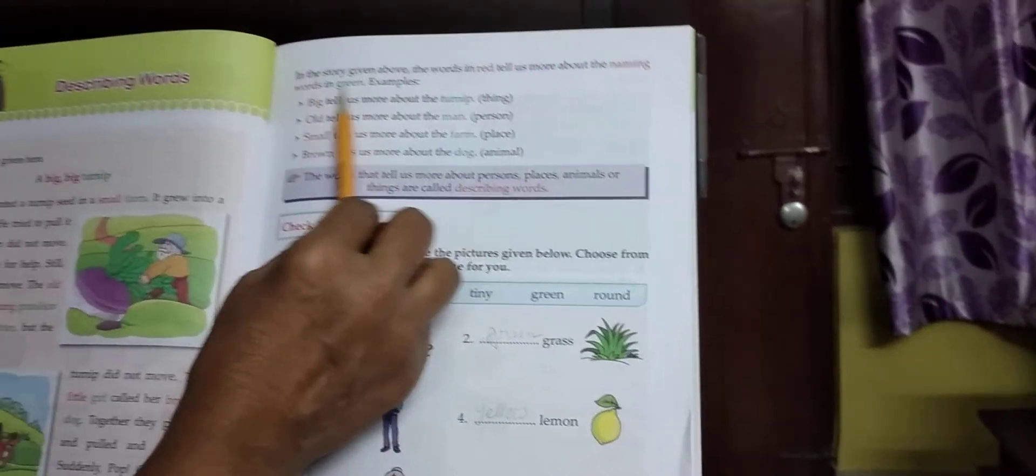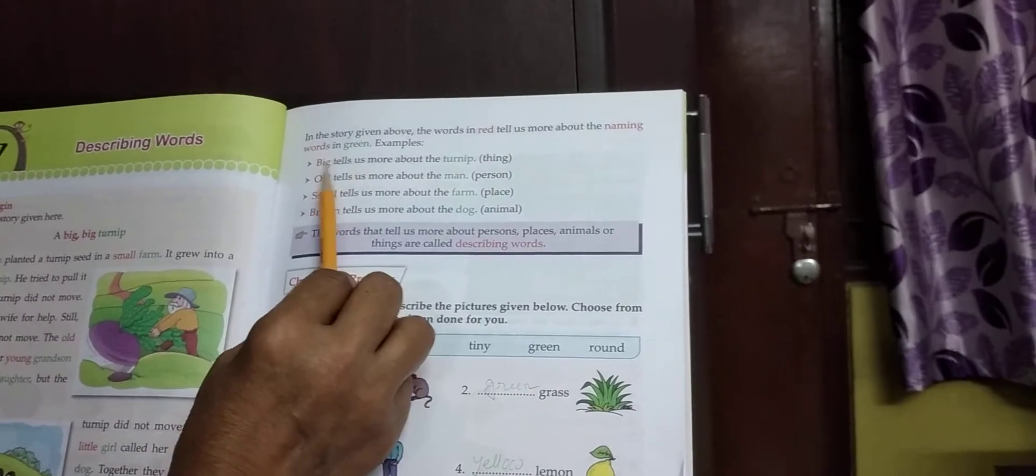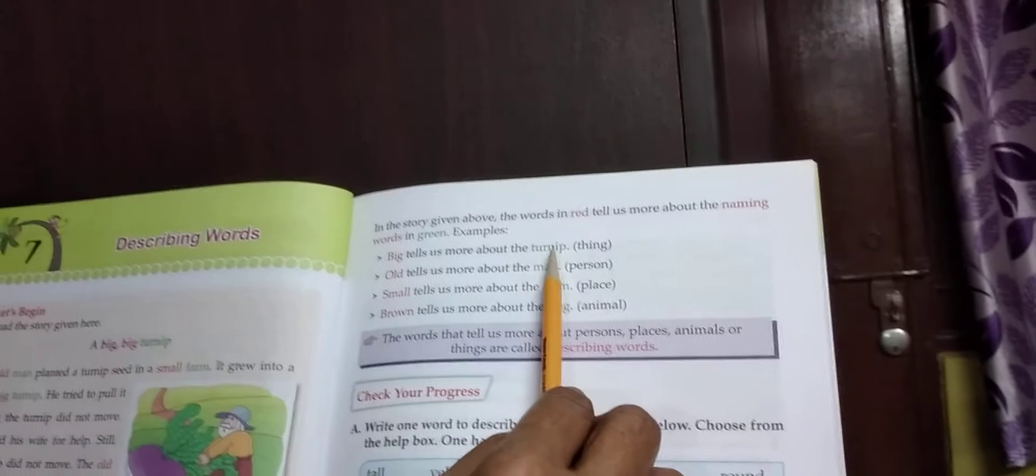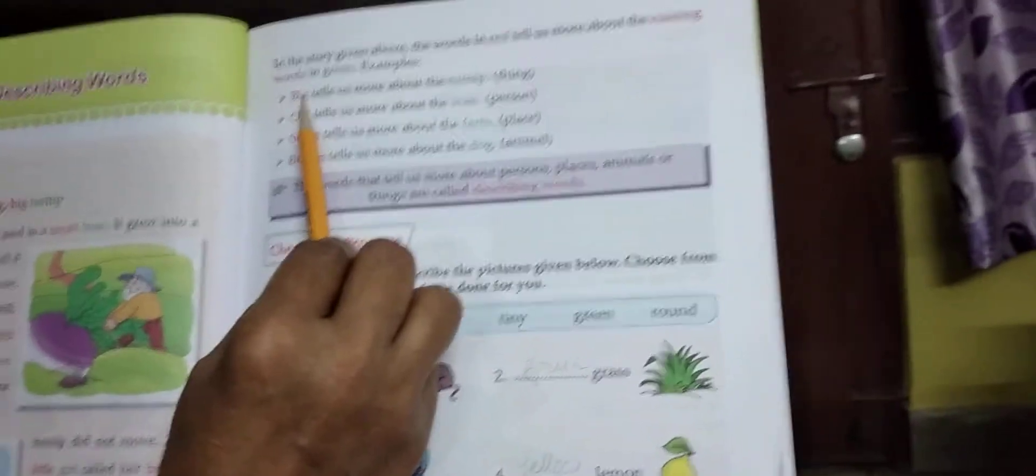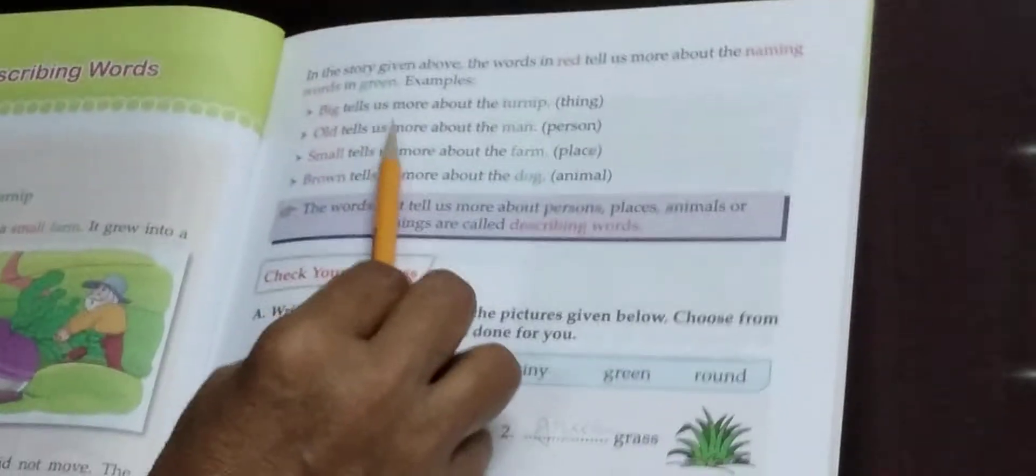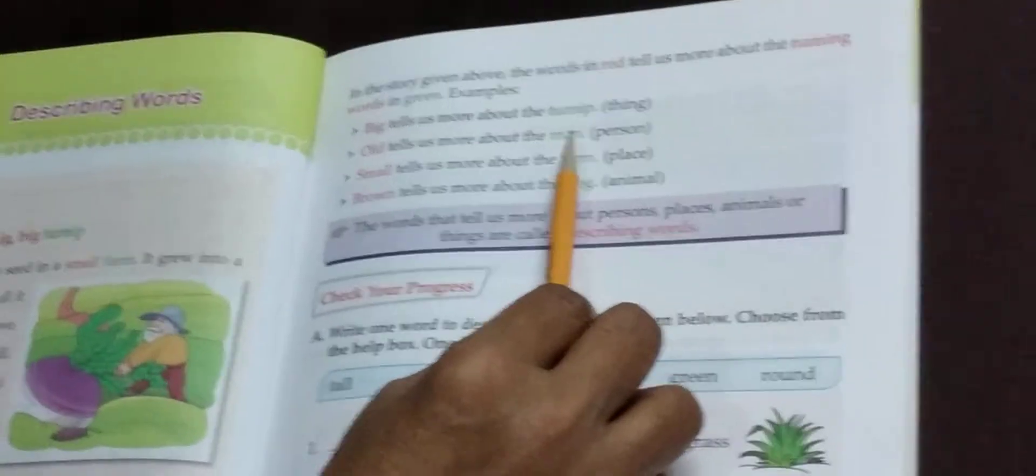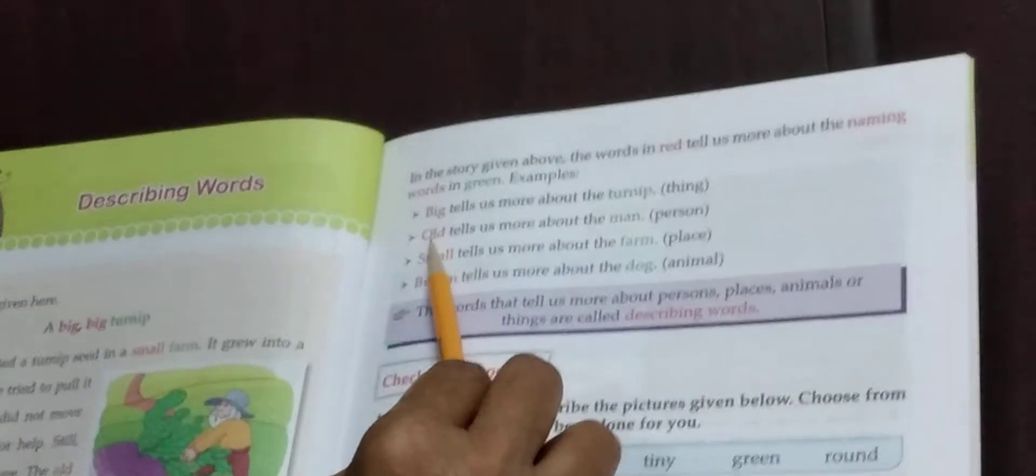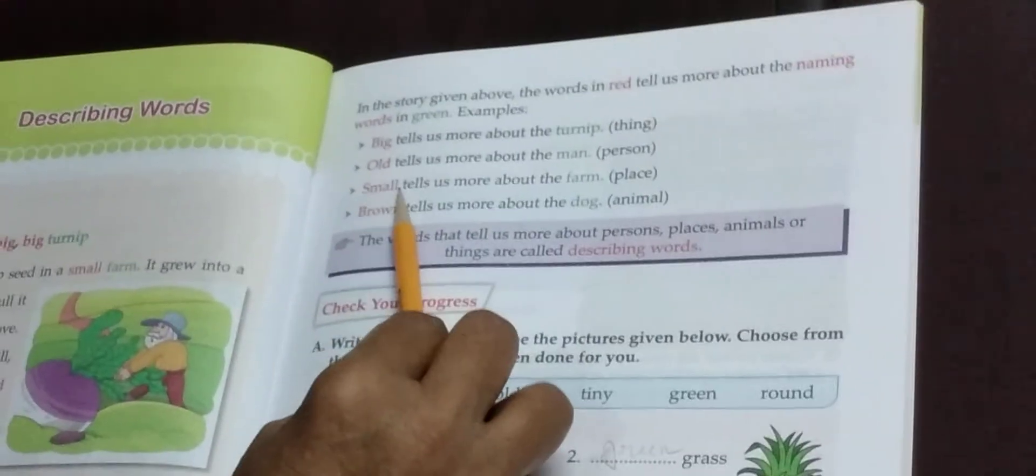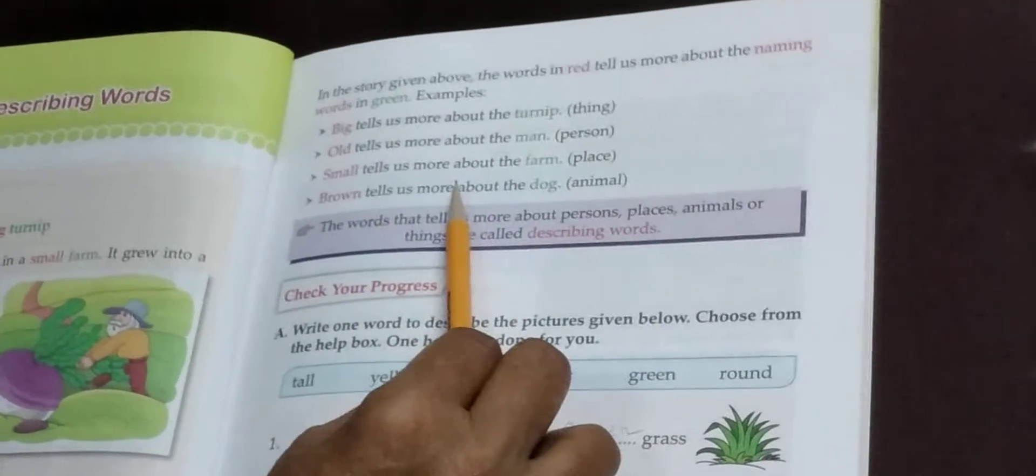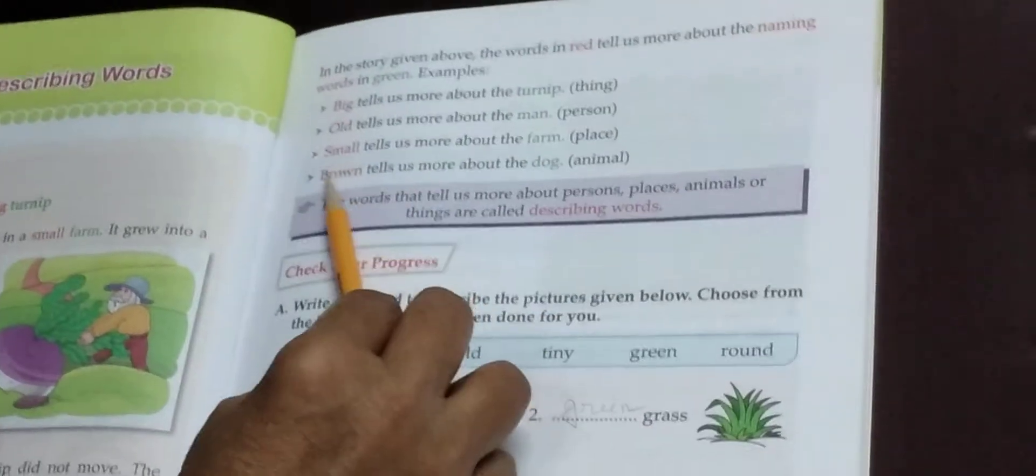Next page 43. Students, very carefully look at page 43. In the story above, the words in red tell us more about the naming words in green. Example: big turnip. Big tells us more about the turnip. What is turnip? Turnip is a thing, a naming word. What is big? Big describes what the turnip is like, so it's an adjective, a describing word. Green is naming word, red is describing word. Old tells us more about the man - man is a person, a naming word. Old is a describing word. Small tells us more about the farm. Farm is a place, a naming word. Small is a describing word. Brown tells us more about the dog. Dog is an animal, a naming word, and brown is a describing word.